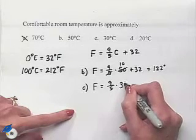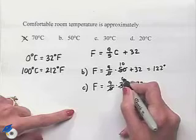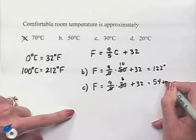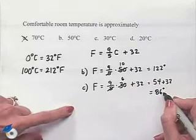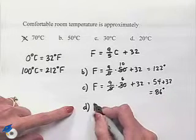C, we have Fahrenheit would equal 9/5 times 30 plus 32. Divide 5 into 30, we get a 6. That would be 54 plus 32. That's equal to 86 degrees. Probably still a little too hot for most people.